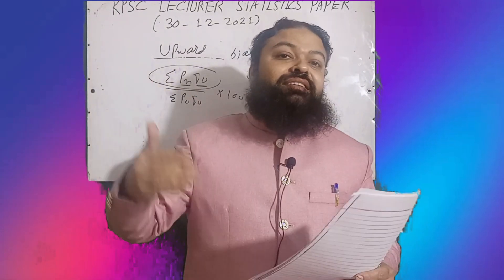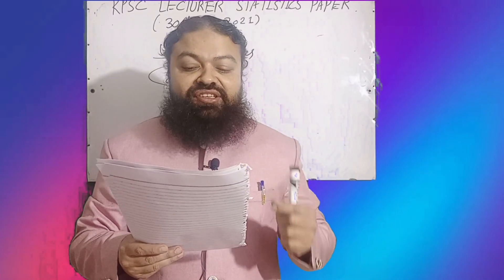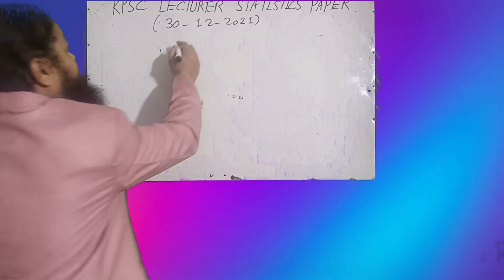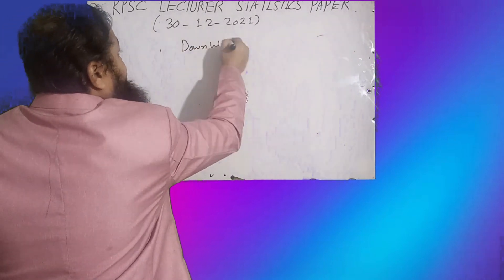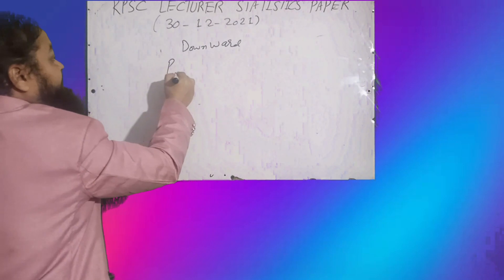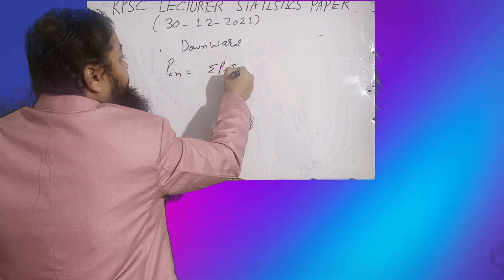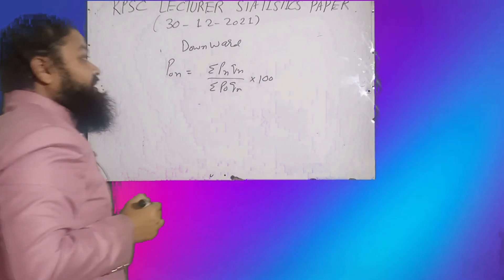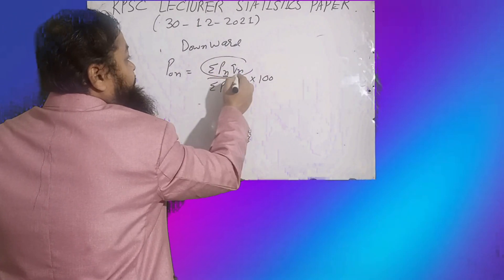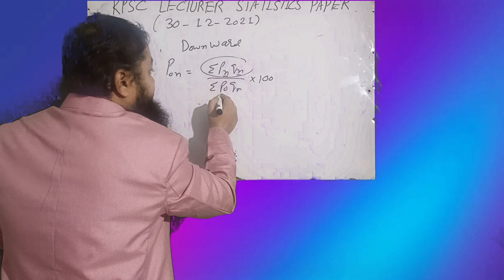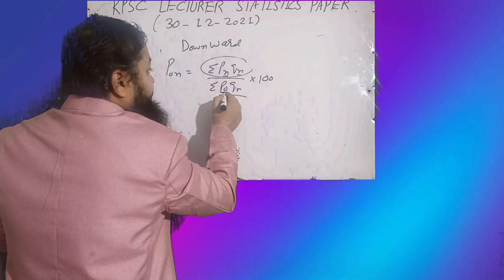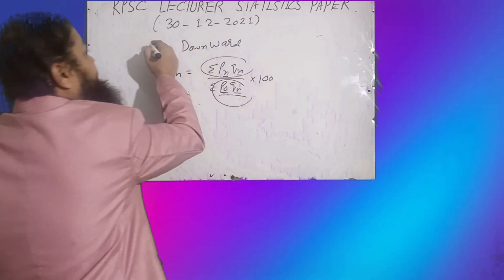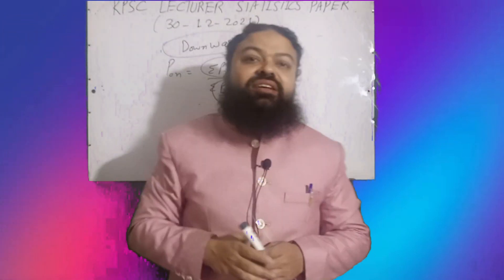Upward bias is the correct option for Laspeyres in the KPSC Lecturer Statistics written test. The next question: Paasche index has downward bias. In Paasche's index number, the formula is: summation of p_n * q_n over summation of p_0 * q_n, multiplied by 100. We multiply the new price with the new quantity, but in the denominator we multiply the old price with the new quantity — the quantity of the current year. That is why it has downward bias.